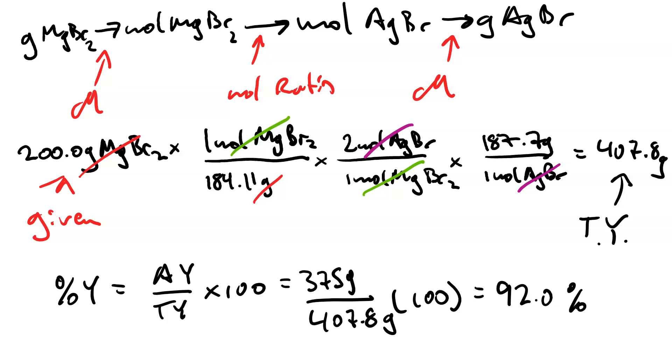Now your percent yield should always be less than 100. If it's more than 100, you've made a mistake.